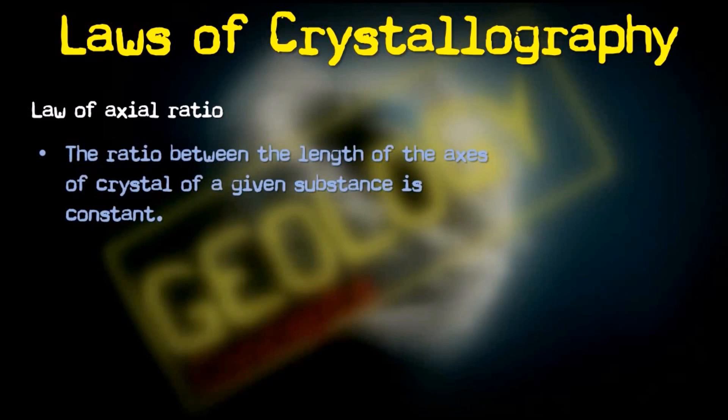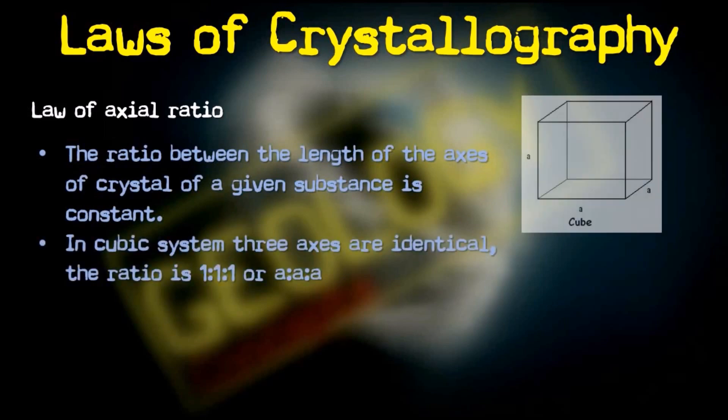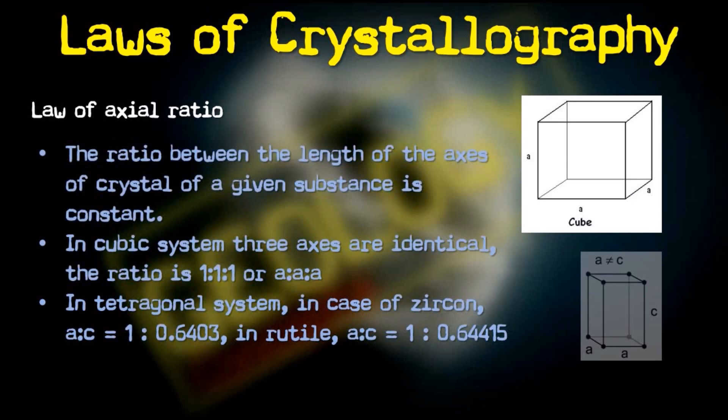The next is the Law of Axial Ratio. This law states that the ratio between the lengths of the axes of the crystal for a given substance is always constant. For the cubic system, the ratio of the sides of a cubic crystal will be 1:1:1, or a:a:a. For a tetragonal system, in the case of zircon crystal, a:c will always be 1:2.6403, and in the case of rutile, a:c will always be 1:0.6441. This ratio will always remain constant for a given system.